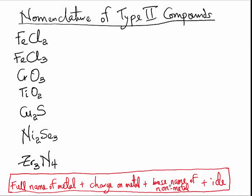Let us now take a look at how to name Type 2 compounds. The difference between Type 1 and Type 2 compounds is that in Type 1 compounds we know the specific charge on the metal in the compound. The problem with Type 2 compounds is that most transition metals do not have just one specific charge. For example, take a look at these two compounds — both of them cannot be iron chloride. So that is why they are Type 2 compounds.